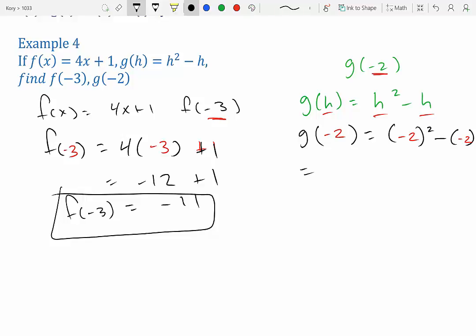So we have (-2)² is 4. And the minus minus become plus. So we have 4 + 2, which is 6. So g(-2) = 6.